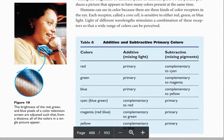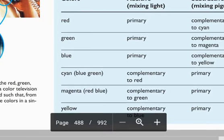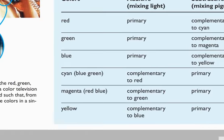And here is Figure 19. The brightness of the red, green, and blue pixels of the color television screen are adjusted such that from a distance all of the colors in a single picture appear. And here we have our additive and subtractive primary colors table. I'm not going to read it to you, but I just want you guys to look at that.